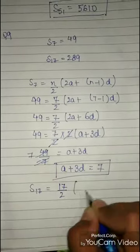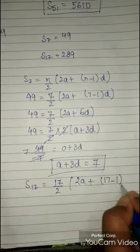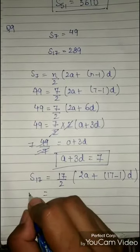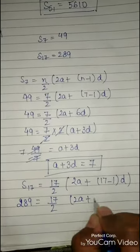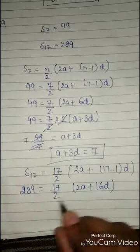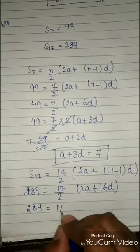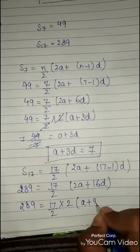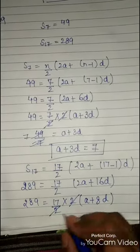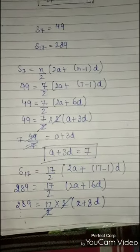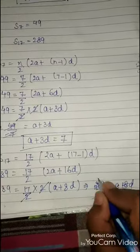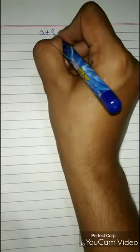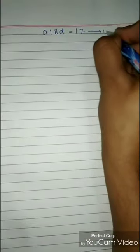Now writing the formula for S17: 289 = 17/2 × (2a + 16d). Taking 2 common: 289 = 17/2 × 2 × (a + 8d). The 2s cancel: 289/17 = a + 8d. Solving, we get our second equation: a + 8d = 17.